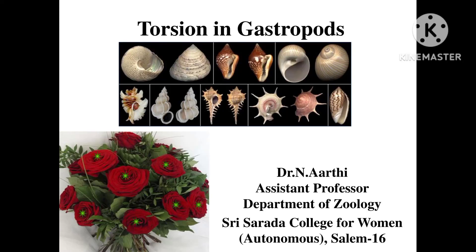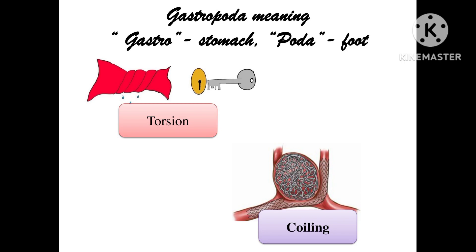Hi everybody, I am very happy to get connected with you all through this educational video. Today we are going to discuss about torsion in gastropods. We are all familiar with the phylum Mollusca, and under it Gastropoda is found. The word 'gastropoda' means gastro — stomach, and poda — feet or foot. So these organisms move with the help of the stomach-foot, hence they are named gastropoda.